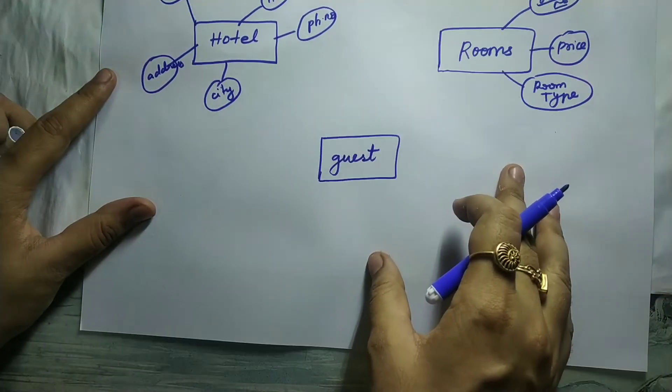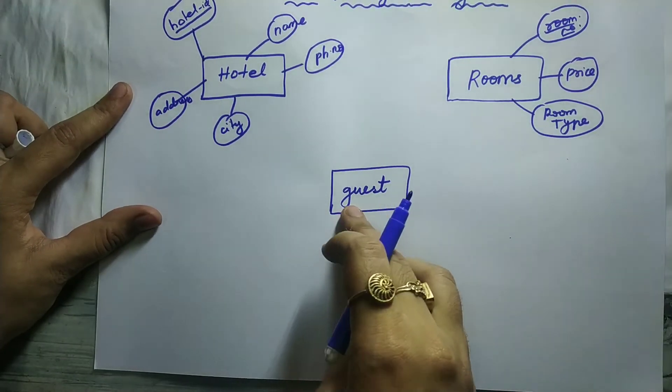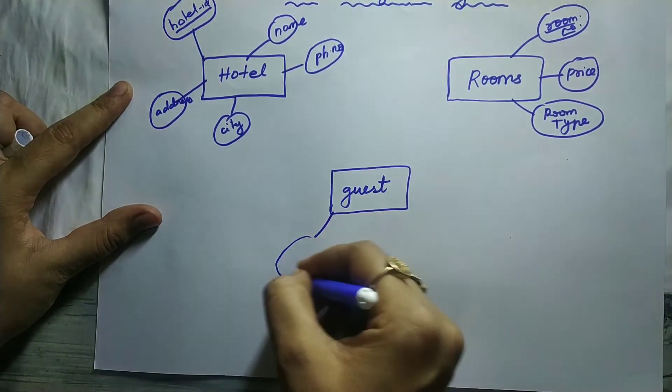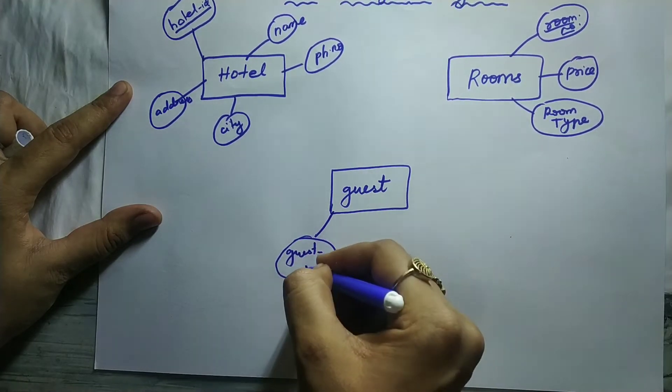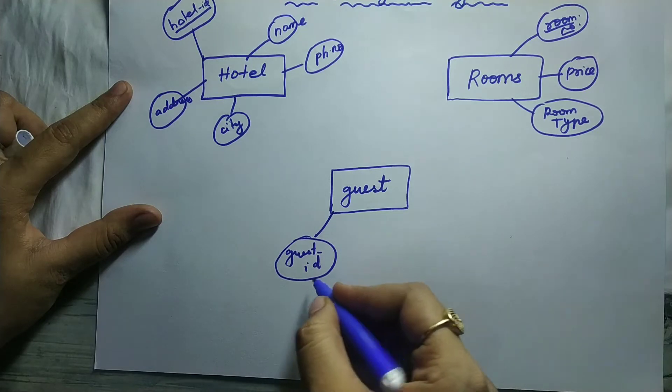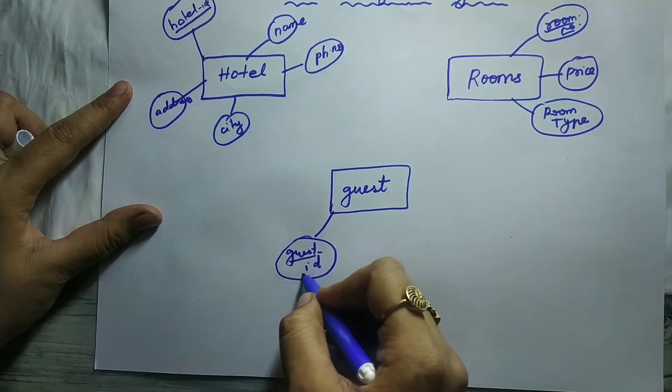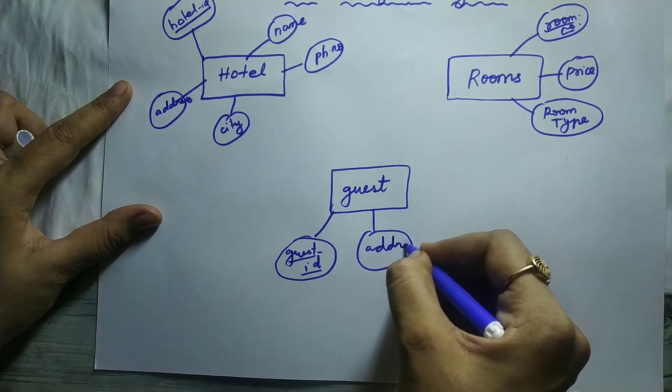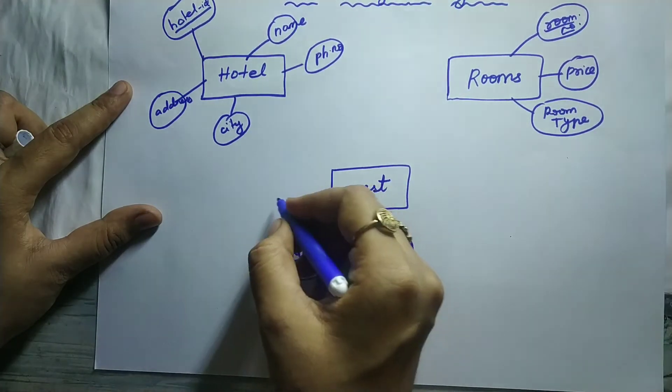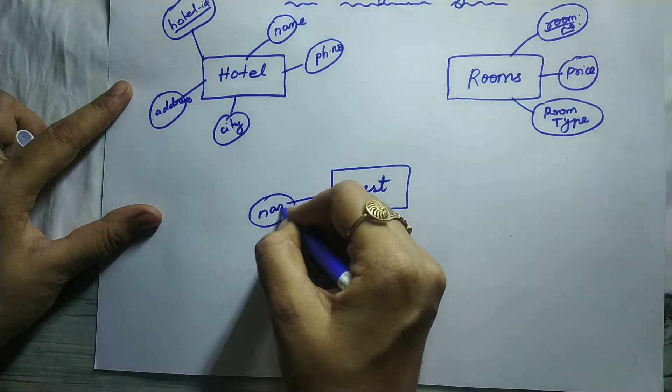Next what are all the attributes of guest. Guest will also have a guest ID, which is unique for every guest, therefore it is a primary key, it must be underlined. Next address of that guest, next name of that guest.